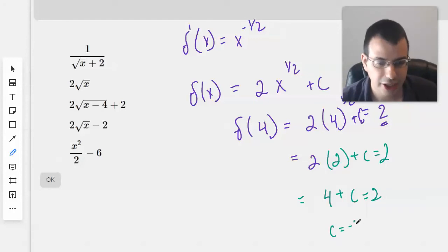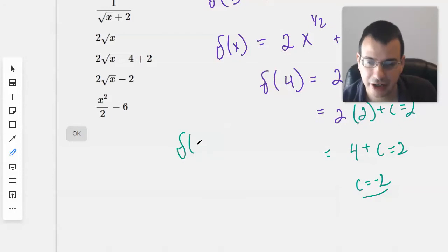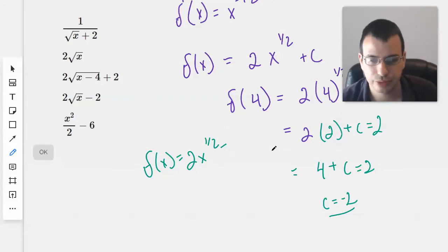c equals negative 2. So then f of x equals 2x to the 1 half minus 2, which is the same as 2 square root of x minus 2.